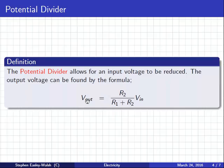Write this definition down. If I said in the exam 'the potential divider is used to change the voltage,' is it enough? Not quite, because the potential divider isn't used to change the voltage — it's used to reduce the voltage. It can never make it bigger, it can only make it smaller. So the verb should be 'reduce,' or 'decrease,' anything like that.